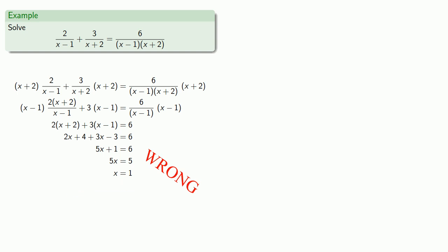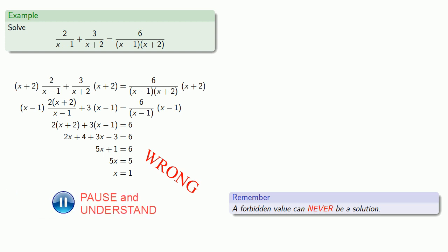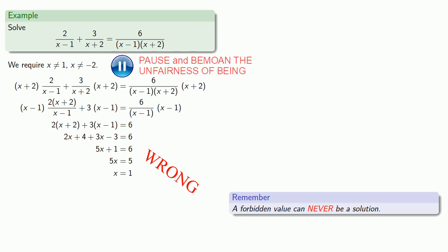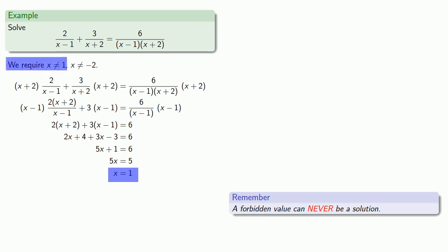So why is this answer wrong? Remember that a forbidden value can never be a solution. And if we take a look at our original equation, we realize that we have to require that x cannot be 1 and x cannot be negative 2. And what that means is that this thing that looks like a solution is actually one of the forbidden values. And since this is a forbidden value, this is not a solution. And in fact, this equation has no solution.